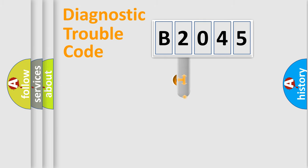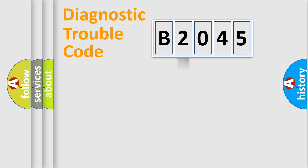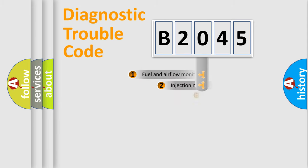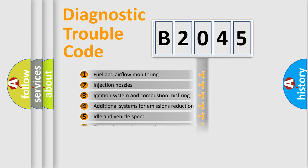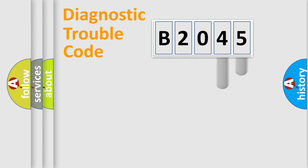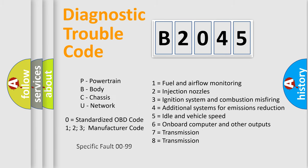This distribution is defined in the first character of the code. If the second character is expressed as zero, it is a standardized error. In the case of numbers 1, 2, or 3, it is a more specific expression of a car-specific error. The third character specifies a subset of errors. This distribution is valid only for the standardized DTC code, and only the last two characters define the specific fault of the group.